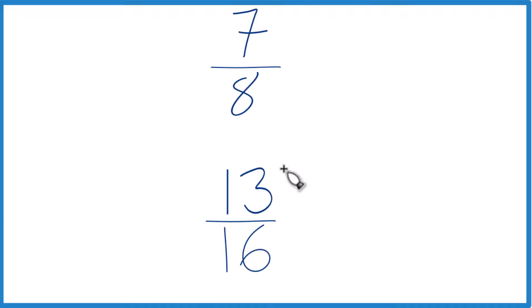First off, you might try to reason it out or you might use a calculator. 7 divided by 8 to get a decimal, 13 divided by 16 to get a decimal, then just compare the decimals.